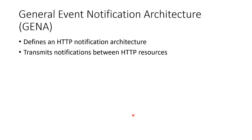GENA is the General Event Notification Architecture. It defines what an HTTP notification is supposed to look like and will transmit notifications between HTTP sources, resources, devices, and so on.